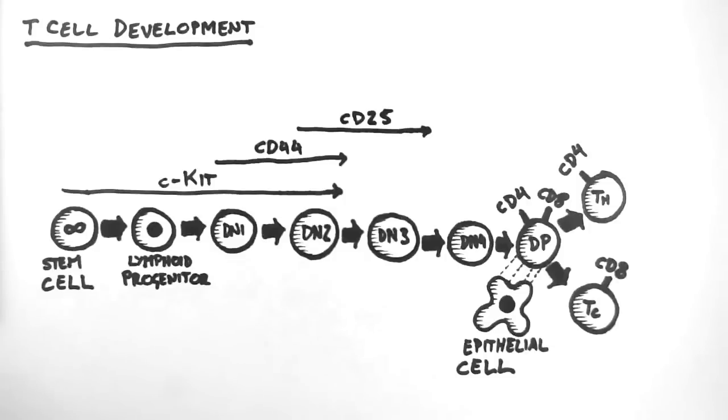I know this can be confusing, so I'll give an example. Imagine in a laboratory you conducted a bunch of tests on a cell and you found out that it was CD44 negative, CD25 positive, CD4 negative and CD8 negative. The only cell that this could be would be the DN3. This is because it is the only cell that fits all these criteria.